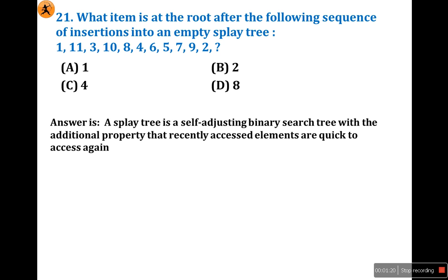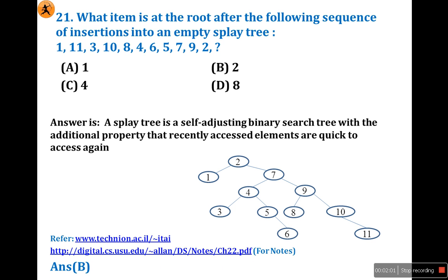Now you are clear about what is a splay tree - it's a special kind of binary tree where recently accessed elements are quick to access again. This question asks what item is at the root after the following sequence? After inserting 1, 11, 3, 10, and so on, like all operations in AVL tree. For this one, just refer this link: technion.ec.in. After inserting all the elements, you will get the root element is 2. So the answer is B.